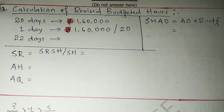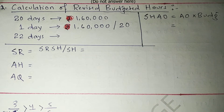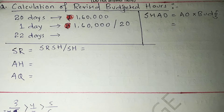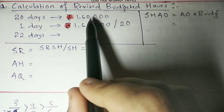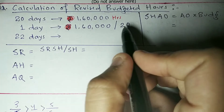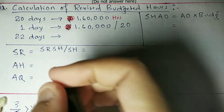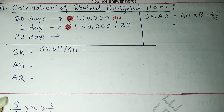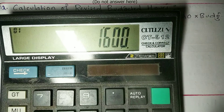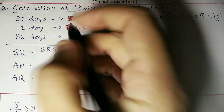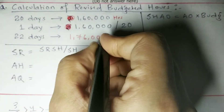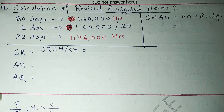Let's start the solution. The very first thing we calculate is Revised Budgeted Hours (RBH). In 20 days, 1,60,000 hours are being used. So in one day it is 1,60,000 ÷ 20, and for 22 actual days it is (1,60,000 ÷ 20) × 22 = 1,76,000 hours. This is your Revised Budgeted Hours.